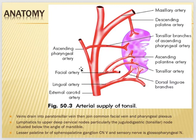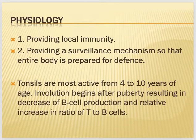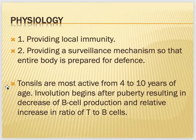The glossopharyngeal and trigeminal nerves innervate the tonsils. The tonsils provide local immunity and a surveillance mechanism, and they are most active from four to ten years of age. After that, they are not so active — that is the reason tonsillectomy is typically done at this age. Tonsillitis is one of the most important topics in otolaryngology because it is so common.